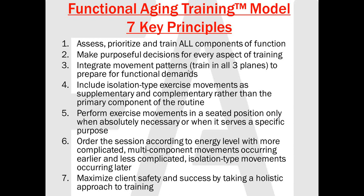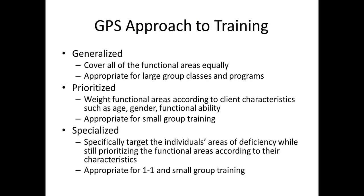Those are the seven key principles of our training model. Now let's get into how to apply this in different situations. I have what I call a GPS approach to applying the functional aging training model depending on your situation. If you're doing large group classes, you really can't go through all the individual assessments or learn the individual needs of your clients. So you have to take a more generalized approach — look back at those functional domains we've talked about: power, velocity, motor control, coordination, and cover as many as possible in your programming.